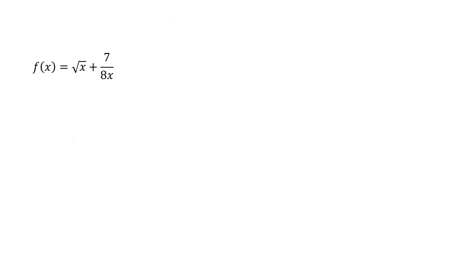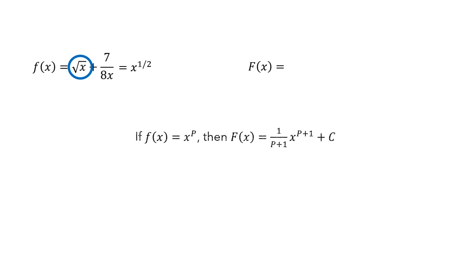We'll start with f and use a capital F to denote the antiderivative. Let's first focus on the square root. We don't have any rule that explicitly says how to find the antiderivative for a square root, but we can rewrite it as x to the 1/2. In particular, we can now use the rule for x to a power. In this case, the p is 1/2.